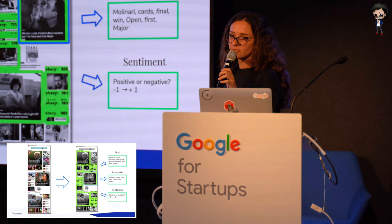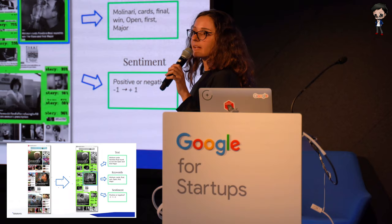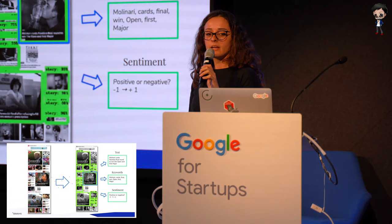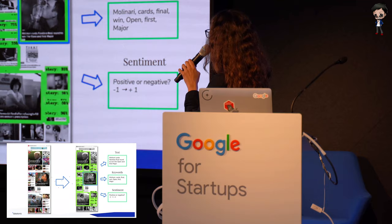Even though Google Cloud provides a solution for this in the Vision API, they were interested in a custom model that they could understand better and explain better. So that model is a custom model. For the other components, they actually used Google Cloud APIs — we're going to see them in a little bit. This is the Google Cloud Vision API to extract the text, and then the Google Cloud Language API to extract keywords and sentiment.